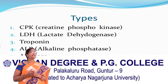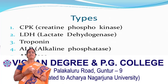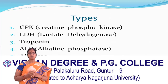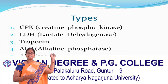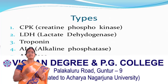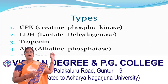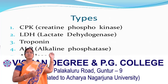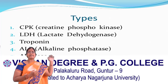Next we will see the different forms of isoenzymes. The first one is CPK, which is called creatine phosphokinase. The second one is lactate dehydrogenase. The fourth one is alkaline phosphatase, represented as ALP. The fifth one is aldolase.